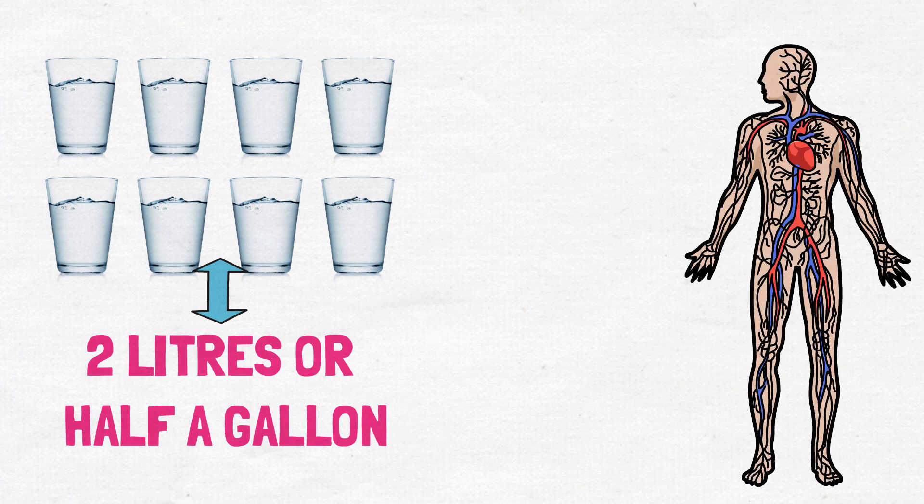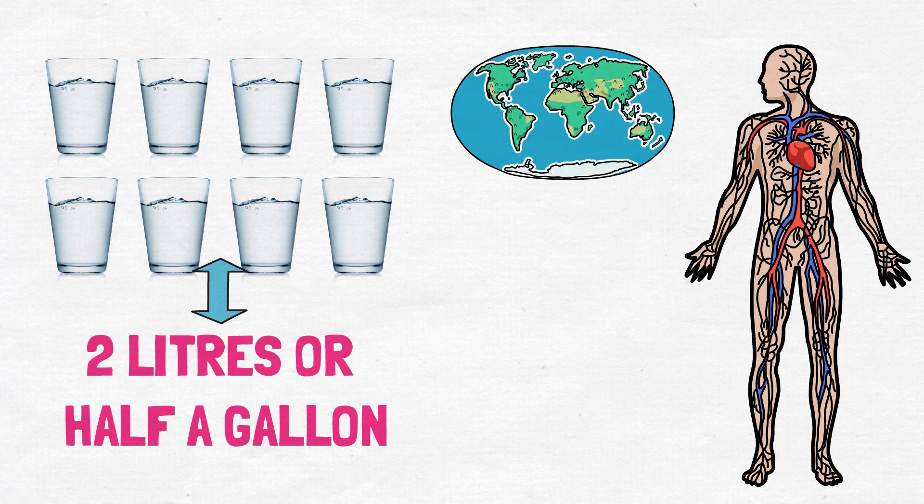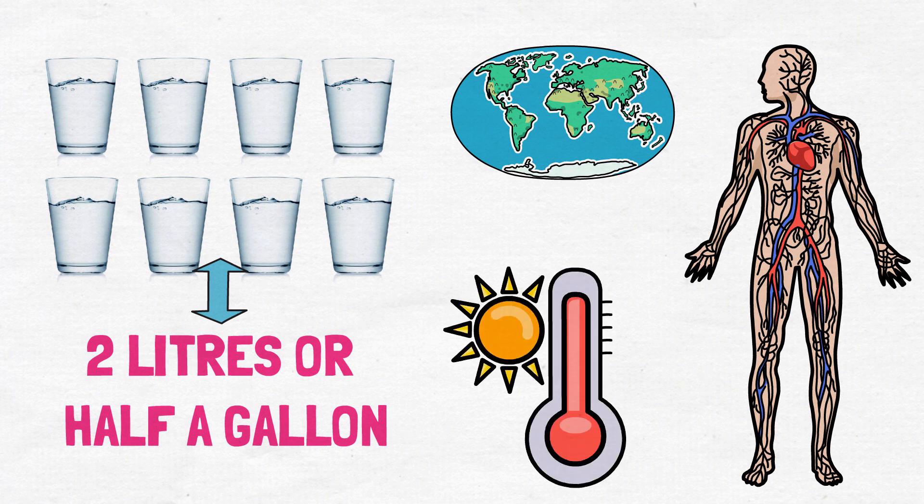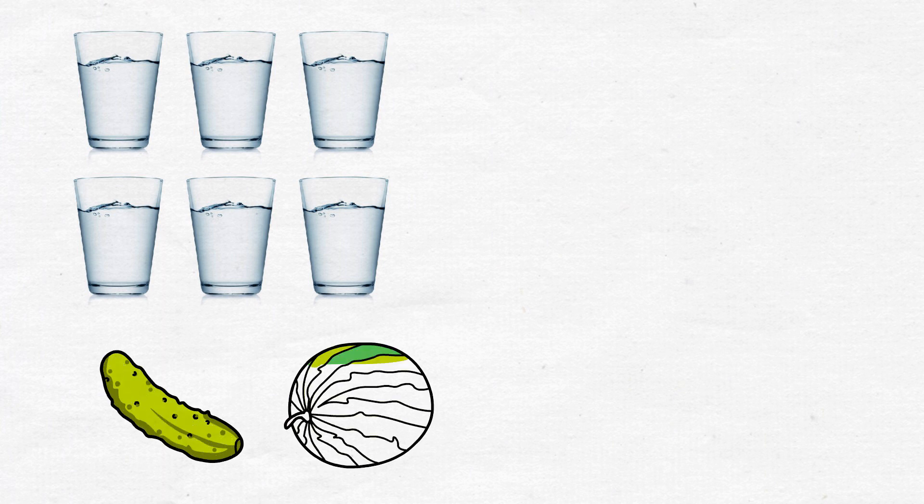You might need to adjust this general recommendation depending on your health, physical activity, diet, and geographic location. Ideally, individuals who live in hotter locations should drink much more than this general recommendation. On the other hand, you might need less if you consume a lot of foods that are high in water content, such as cucumbers and melons.